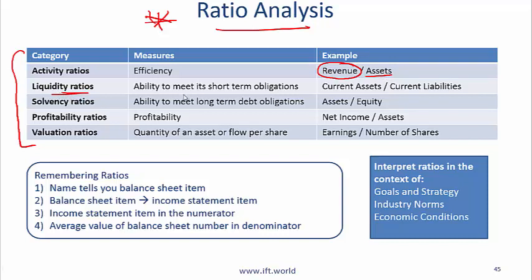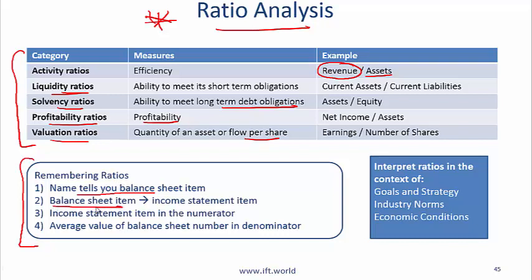Liquidity ratios tell us about a company's ability to meet short-term obligations. Solvency ratios tell us about a company's ability to meet long-term debt obligations. Profitability ratios tell us about the profitability of a company. Here is a small trick for remembering ratios: focus on the name of the ratio, which will tell you which balance sheet item is part of it. For example, asset turnover ratio — the balance sheet item, assets, is going to be in the denominator.